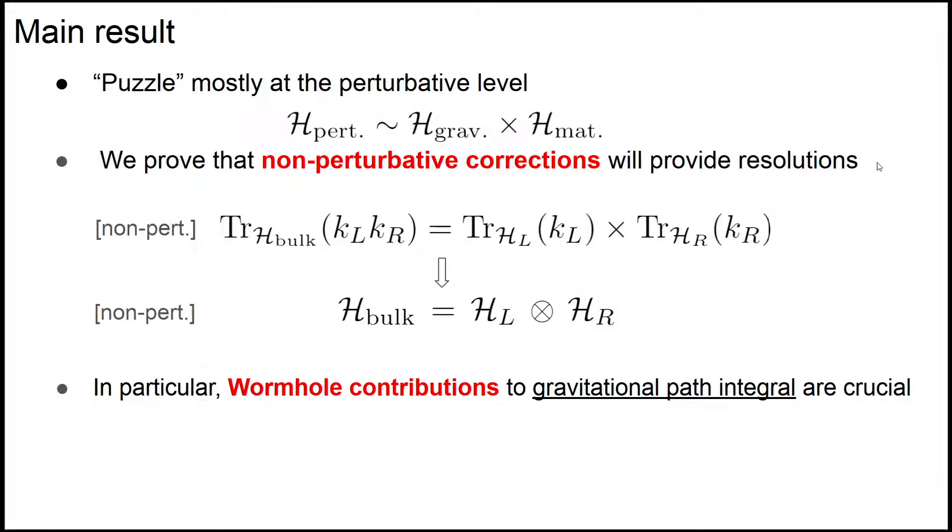These puzzles are mostly at the perturbative level, and we will prove that if we include all non-perturbative corrections, we can solve this factorization puzzle. In particular, we compute the bulk trace of a two-sided aperture and show that due to non-perturbative corrections it will factorize into a left trace and a right trace.